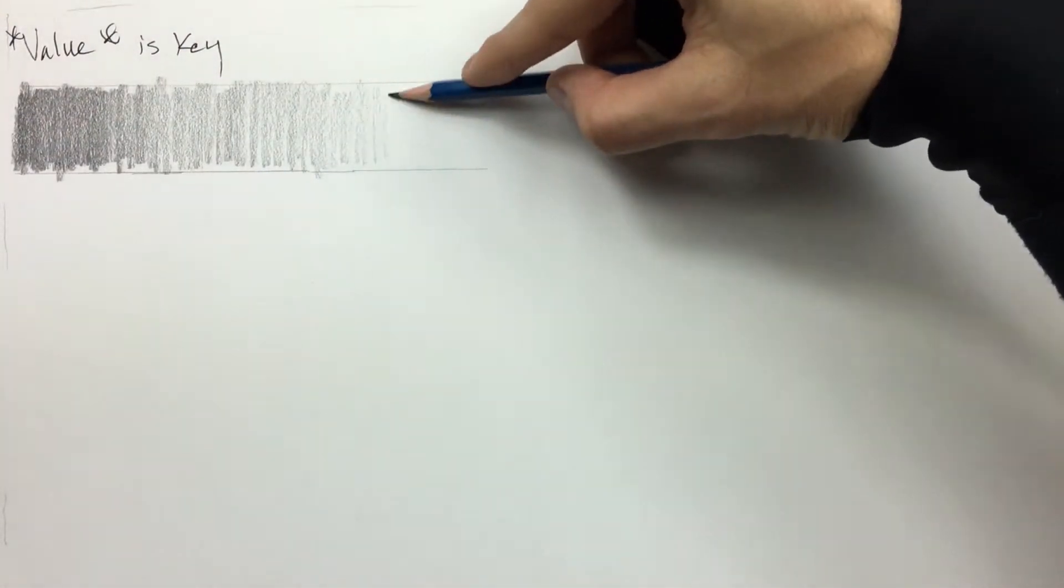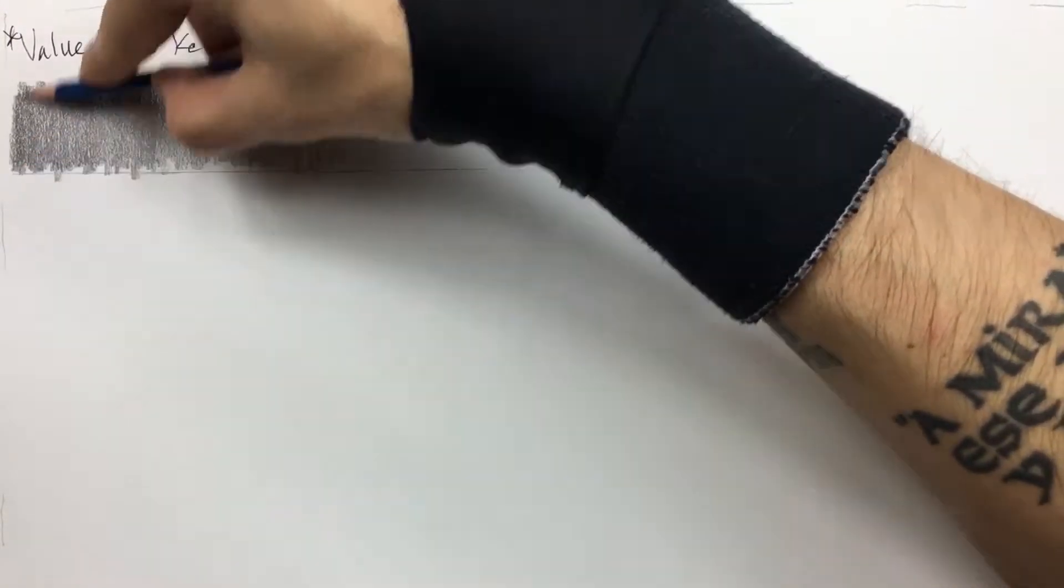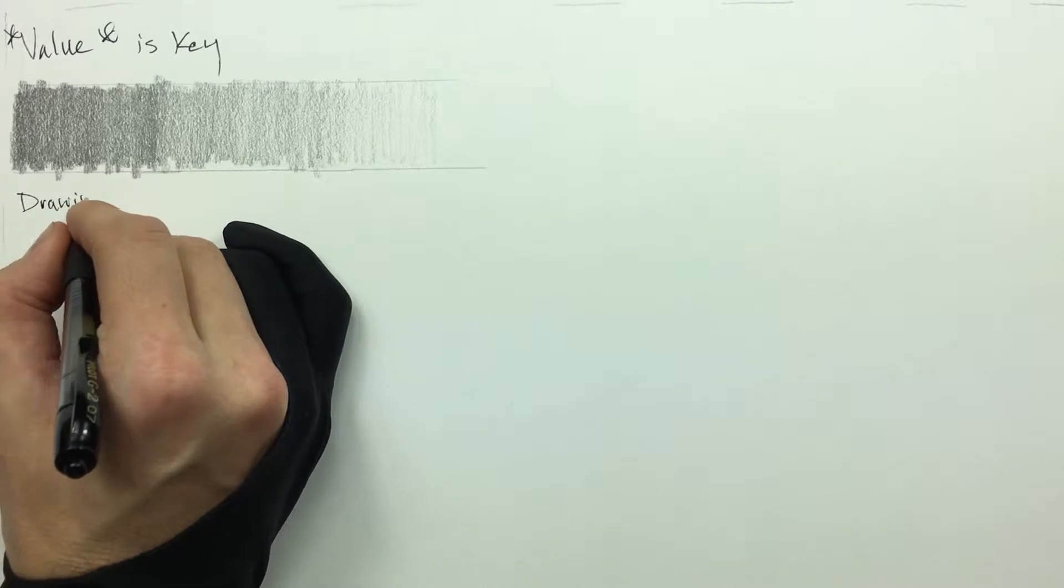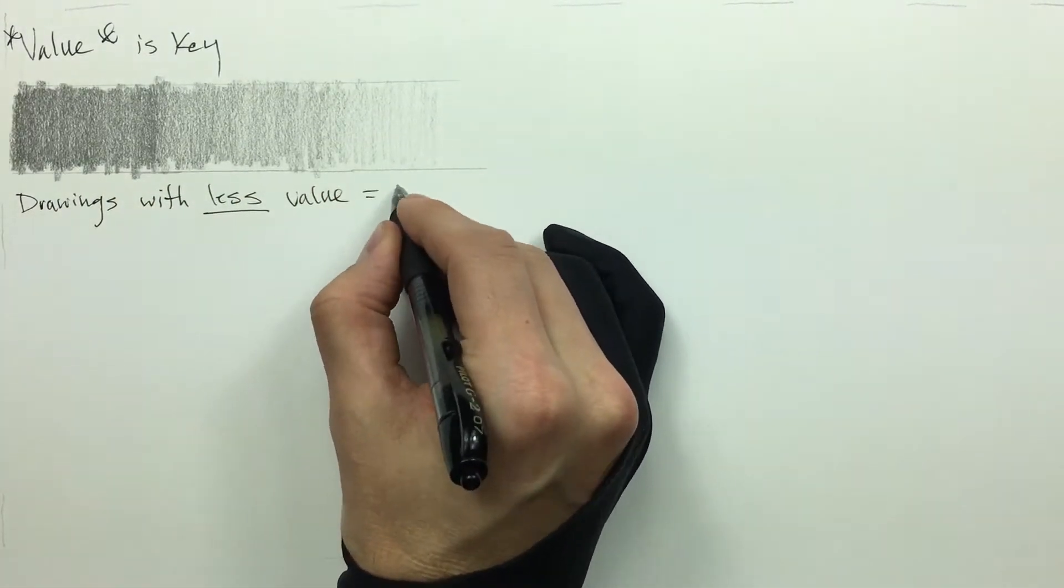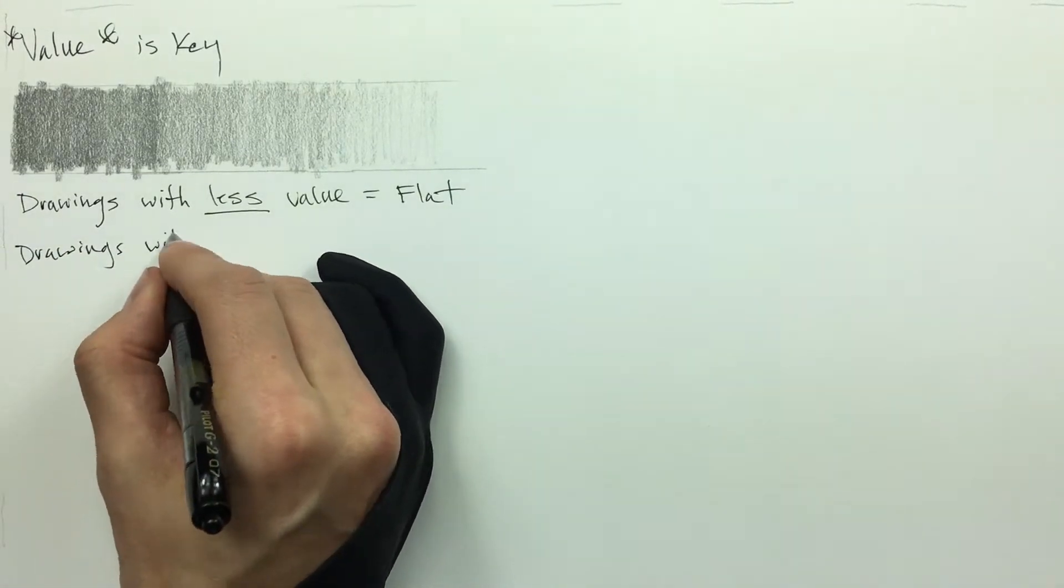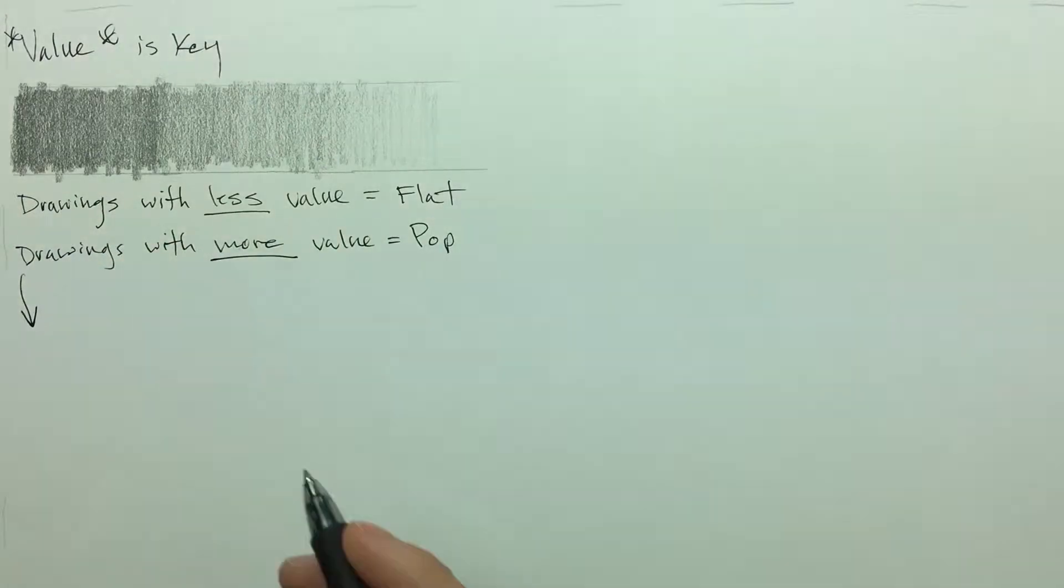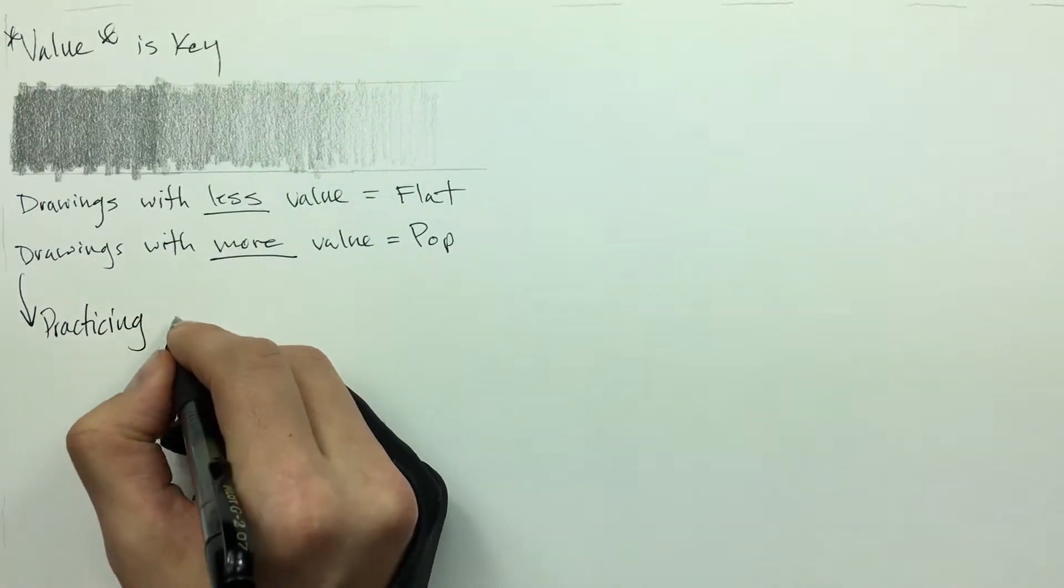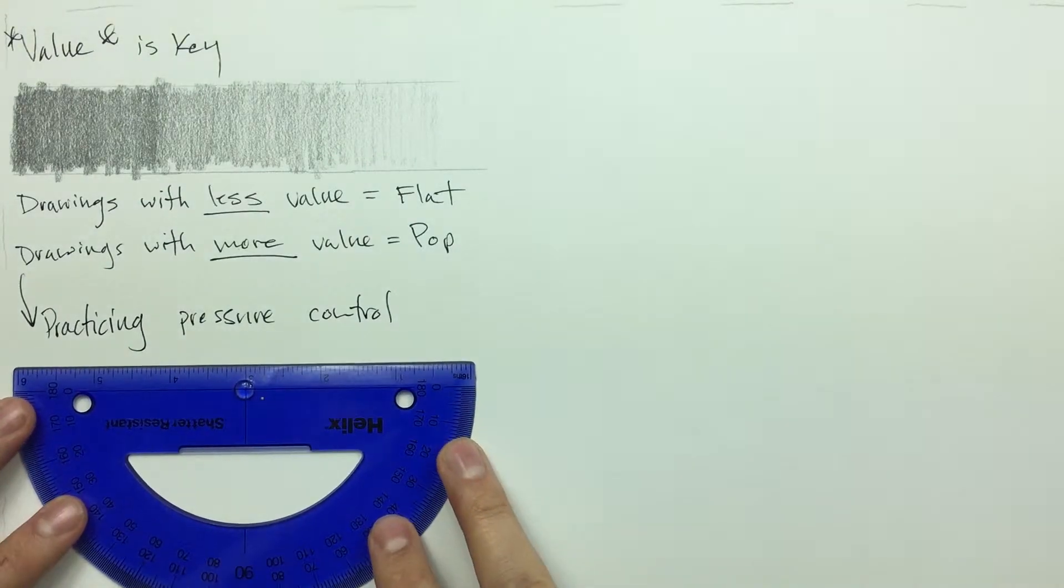Drawings with less value will tend to look flatter while drawings with more value will tend to pop. You can practice your pressure control. I like to take a ruler and draw out some guiding lines much like we did before.